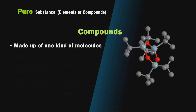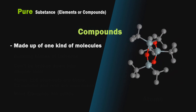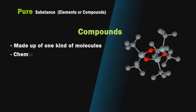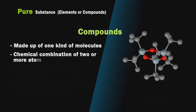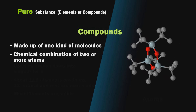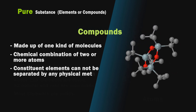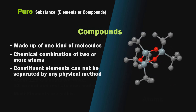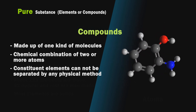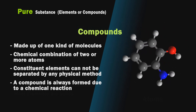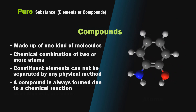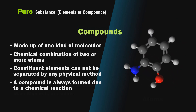Properties of a compound: First, made up of one kind of molecule. Second, it is a chemical combination of two or more atoms. Third, constituent elements cannot be separated by any physical method. Fourth, a compound is always formed due to a chemical reaction.